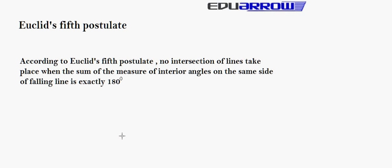Euclid's 5th Postulate. According to Euclid's 5th Postulate, no intersection of lines takes place when the sum of measure of interior angles on the same side of falling line is exactly 180 degrees. Let's take an example.